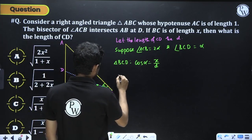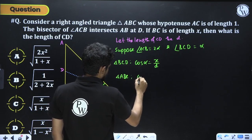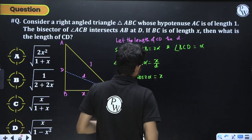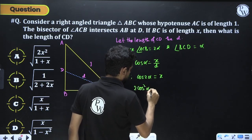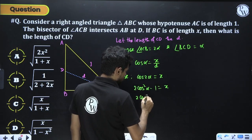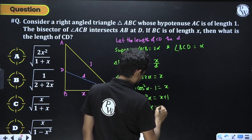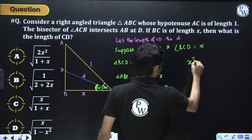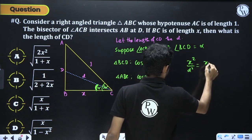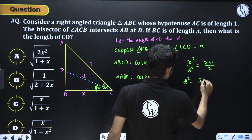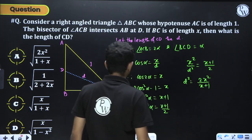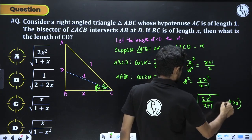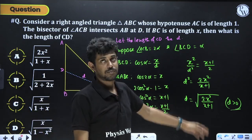Using cos 2α = 2cos²α - 1 = x: so 2cos²α = x + 1. Since cos α = x/d, we have cos²α = x²/d². Therefore x²/d² = (x+1)/2, giving d² = 2x²/(x+1), so d = √(2x²/(x+1)). Since d is a length (positive), the answer is CD = √(2x²/(x+1)).